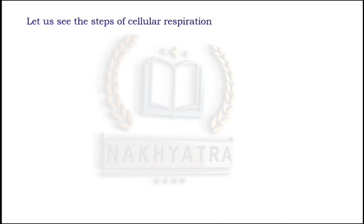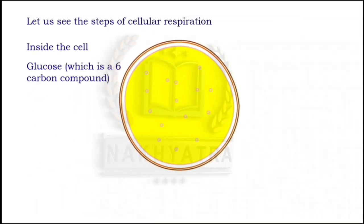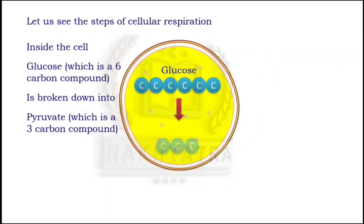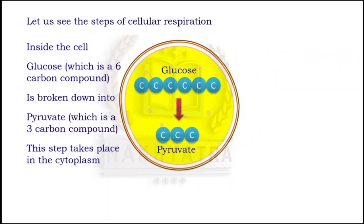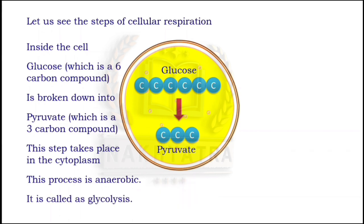Now let us see the steps of cellular respiration. Inside the cell, glucose — which is a six carbon compound — is broken down into pyruvate, which is a three carbon compound. This step takes place in the cytoplasm. This process is anaerobic, meaning it occurs in the absence of oxygen, and this process is called glycolysis.